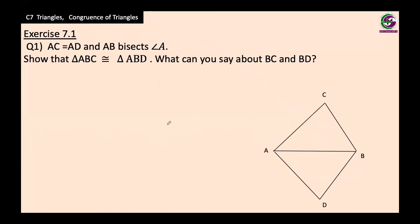Let's move on to the exercise, question one. AC is equal to AD, and AB bisects angle A. Angle A is the obtuse angle CAD, which is bisected — cut into two equal parts. So these two angles are equal. These are the two conditions given.